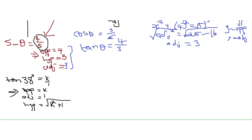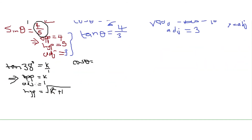From there you can have all the trig ratios. Your cos theta would be your adjacent over hypotenuse, which is 1 over the square root of k squared plus 1. Your sine theta would be the opposite over hypotenuse, which is k over the square root of k squared plus 1.